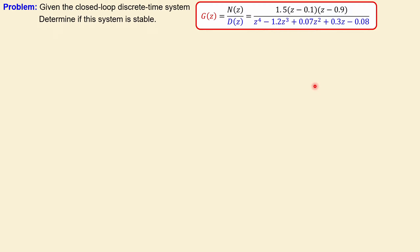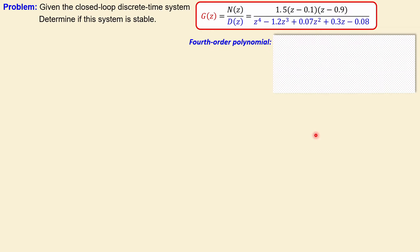We have dealt with a second order system in the previous example, and in the first example we saw a third order system. This will be a fourth order system, so it will be a little bit more detailed. Let's work it out step by step. We start with the fourth order polynomial in its general form, with coefficient a4 for z to the power 4, then a3 for z to the power 3, and so on for each term.